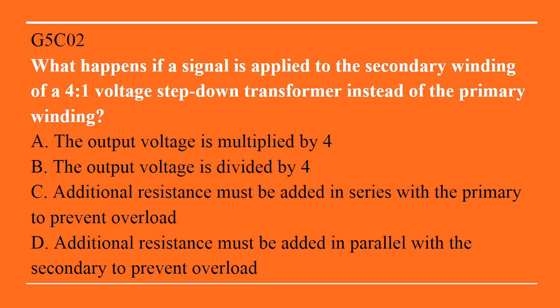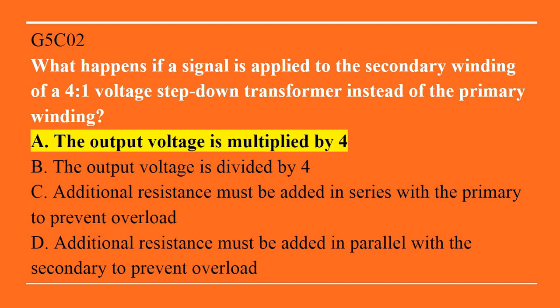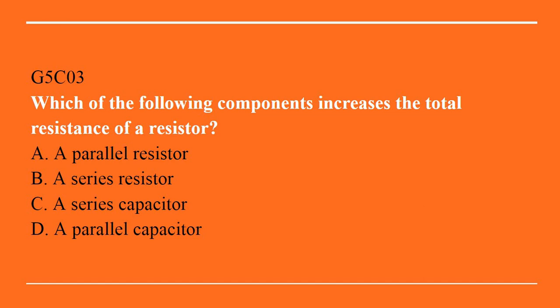G5C02: what happens if a signal is applied to the secondary winding of a 4-to-1 voltage step-down transformer instead of the primary winding? A. The output voltage is multiplied by 4. B. The output voltage is divided by 4. C. Additional resistance must be added in series with the primary to prevent overload. Or D. Additional resistance must be added in parallel with the secondary to prevent overload. Correct answer is A: the output voltage is multiplied by 4. G5C03: which of the following components increases the total resistance of a resistor? A. A parallel resistor. B. A series resistor. C. A series capacitor. Or D. A parallel capacitor. Answer is B: a series resistor.